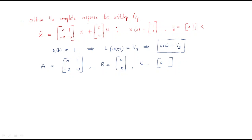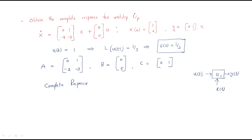The problem asks to obtain the complete response for unit step input. The complete response means the output y. The response is: we give input u(t) to the system and get output y(t). The complete response is y = [0, 1]x, so we need to find x(t).